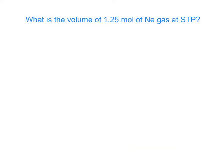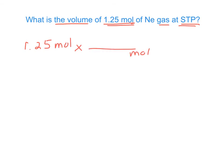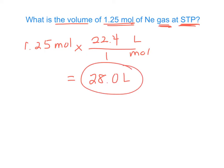What can we do with molar volume? What is the volume of 1.25 moles of neon gas at STP? I start with 1.25 moles and I want to change moles to liters. Since 1 mole of any gas at STP is 22.4 liters, I multiply that out and it comes out to be 28.0 liters. So 1.25 moles of this gas would occupy 28 liters — which makes sense, since 1 mole occupies 22.4 liters.